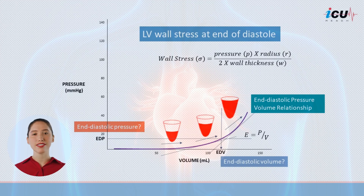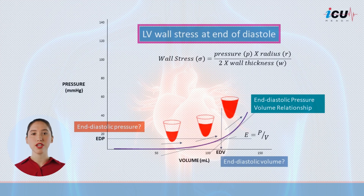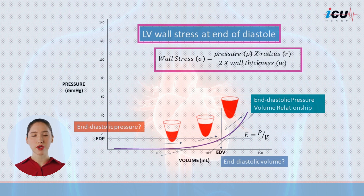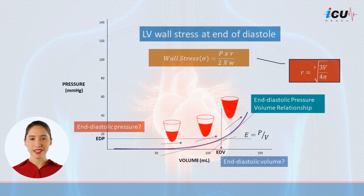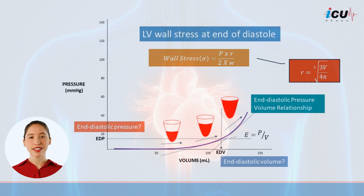Therefore, preload is more accurately defined as the left ventricular wall stress at the end of diastole, which is related to multiple factors included in the Laplace law. This law relates the wall stress in a spherical or cylindrical vessel to the pressure, radius, and thickness of the wall. The formula for left ventricular wall stress, denoted as sigma, is generally expressed as: sigma equals the intraventricular pressure multiplied by the radius of the ventricle, divided by 2 times the wall thickness. This means that preload is influenced directly by both the volume of blood in the ventricle and the pressure at the end of diastole, and inversely by the thickness of the left ventricle wall.